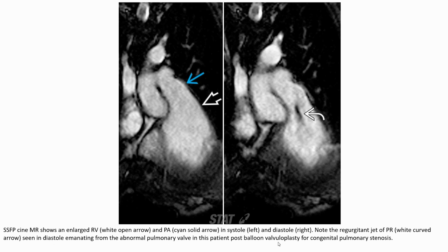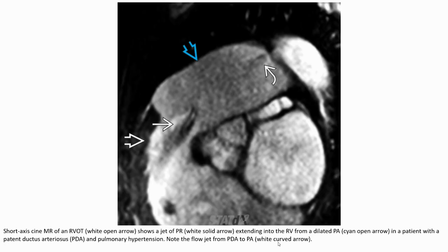This image shows enlarged right ventricle and pulmonary artery on MRI. Another image demonstrates pulmonary regurgitation with an arrow indicating the jet arising from the abnormal pulmonary valve in this patient with congenital pulmonary stenosis.